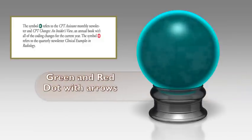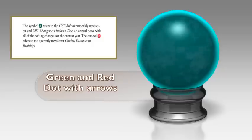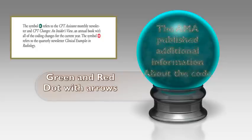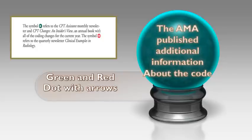The green dot and red dot with white arrows refer to CPT publications. If you need more information about a code, reference these publications — the CPT Assistant and an insider's view, which is an annual book of all coding changes for the current year, symbolized by the green dot. The red dot refers to the quarterly newsletter with clinical examples in radiology.